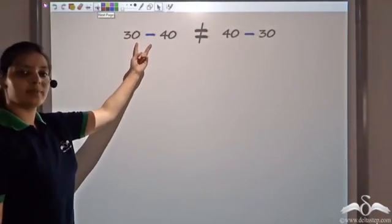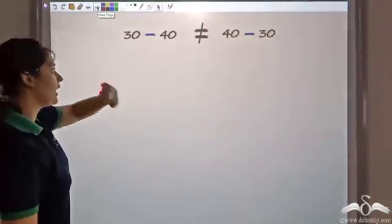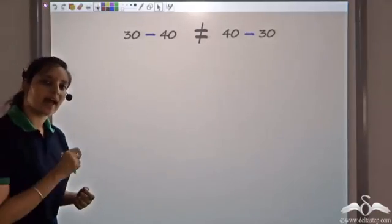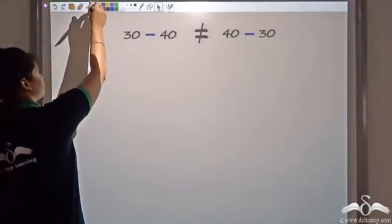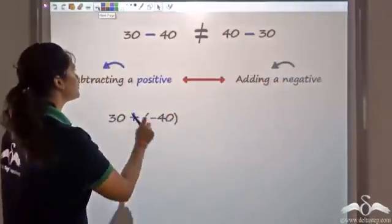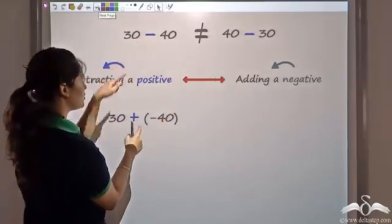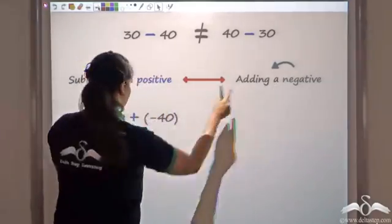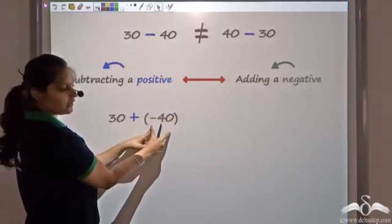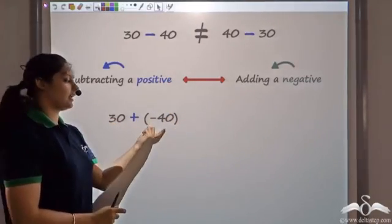We have seen that 30 minus 40 is not equal to 40 minus 30. However, subtraction of a positive number is the same as adding a negative number — subtracting a positive is the same as adding a negative. So rather than writing 30 minus 40, I change it to adding a negative: 30 plus negative 40.